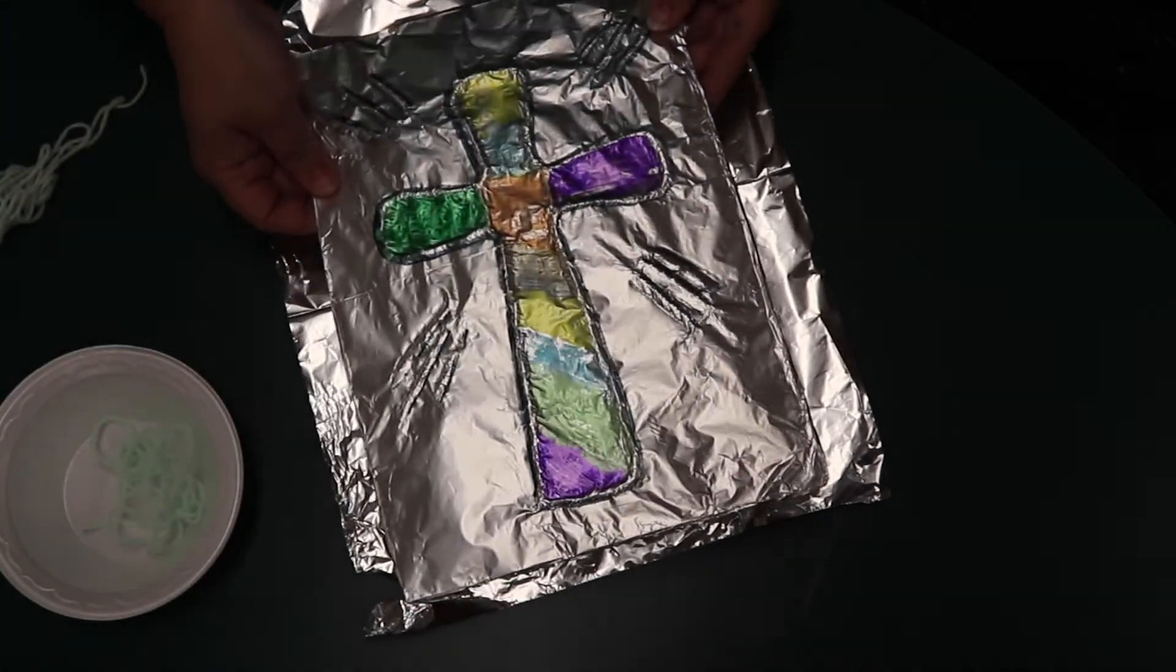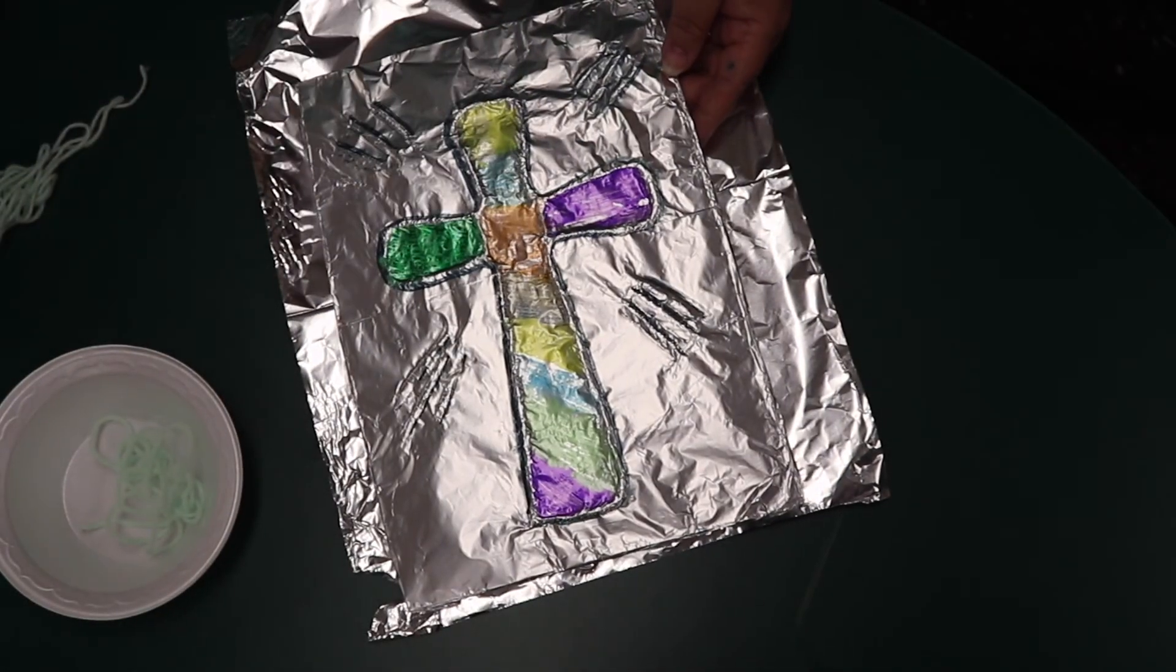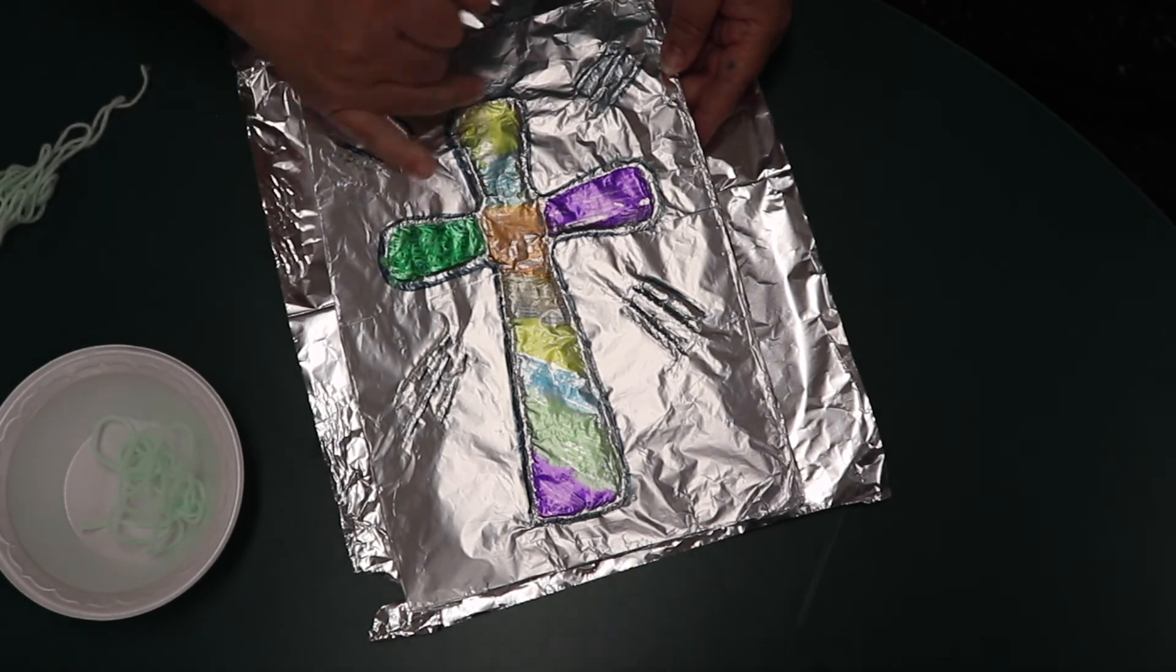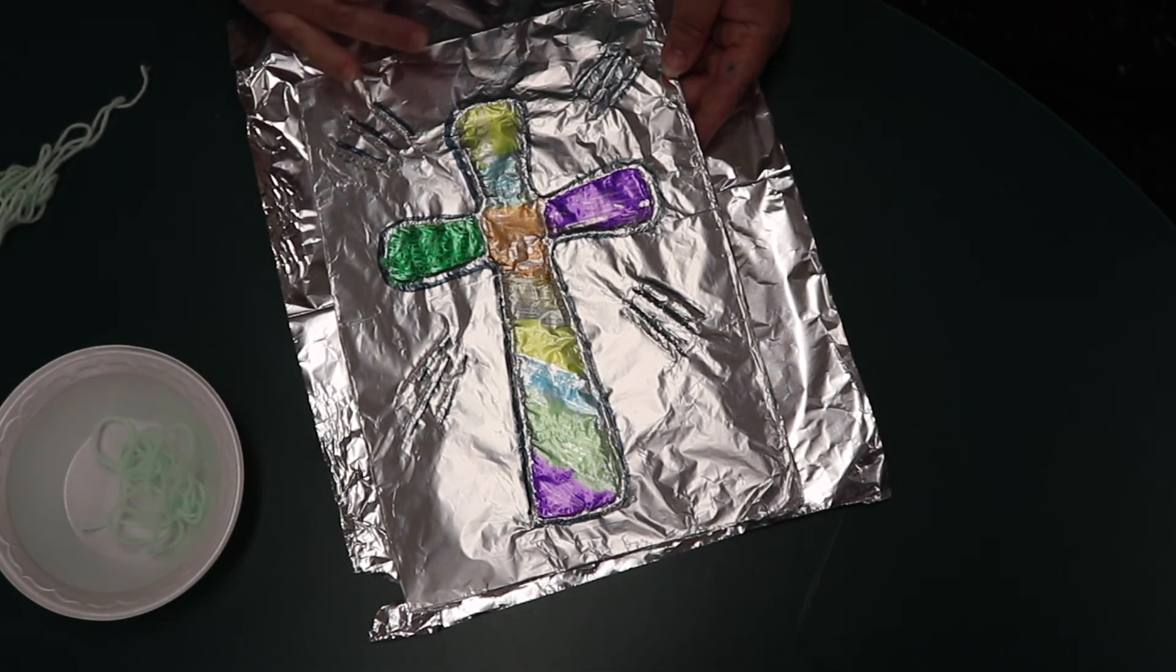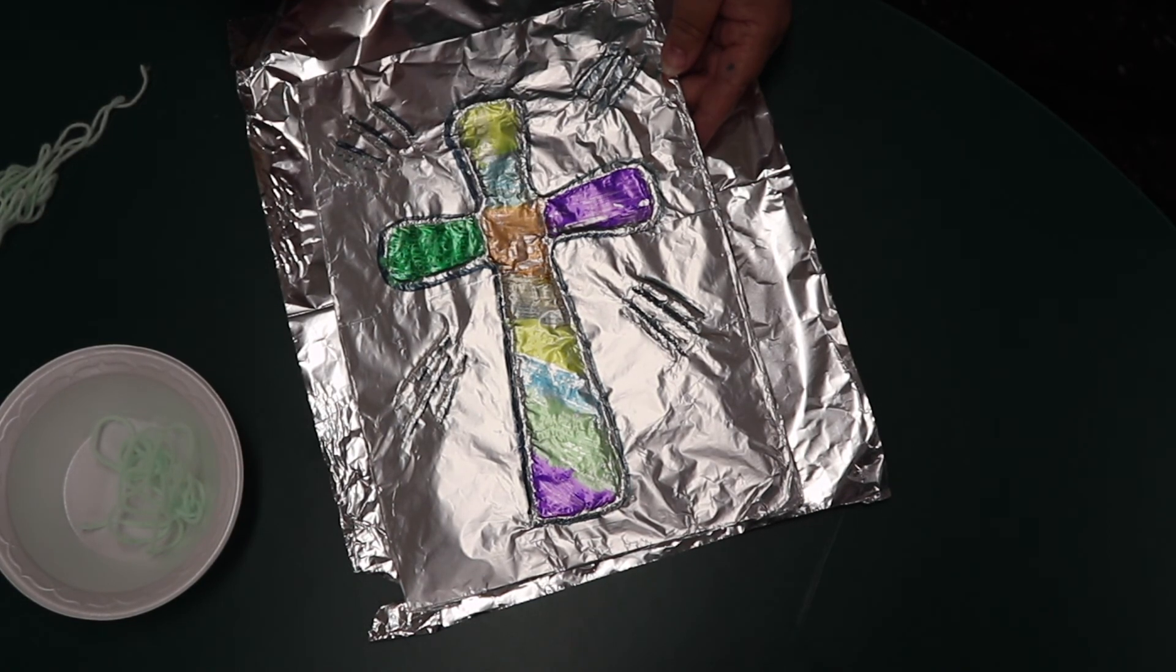Then after you have your tin foil on, you can take markers and color any way you want. It is your picture. You can trace it, you can make it a stained glass cross kind of like what I did, or you can do whatever you wish with it.